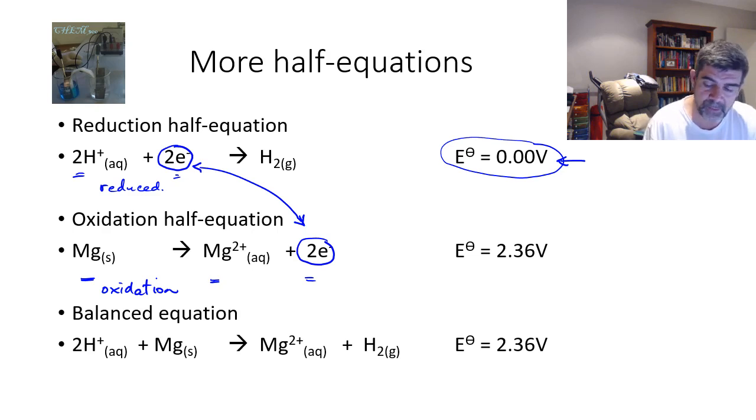Note, however, that we do not multiply the E⁰ value. We may have twice as much hydrogen, we may have 20 times as much hydrogen or 40 times as much magnesium. We don't have 40 times the potential difference, because the key is in that phrase potential difference. The potential difference is the difference in potential between the two metals or the two substances. That's what you need to keep in mind. That difference is a difference. It's not a total amount. It's just measuring a difference.